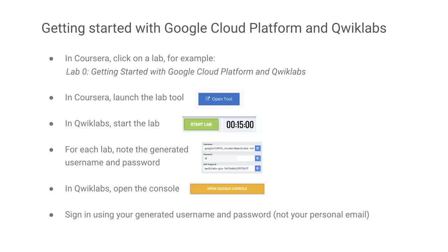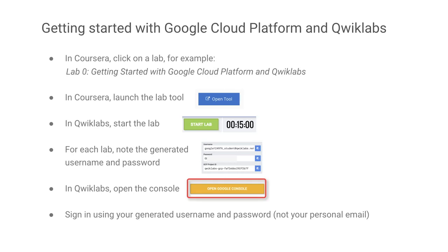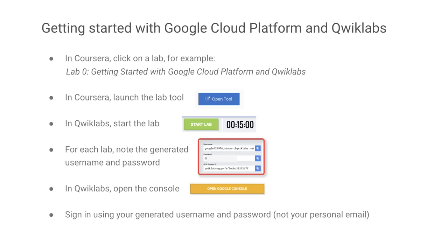After you click that Start Lab, credentials for your student accounts are automatically going to be provided to you in a new box that pops up. In addition, there's going to be another button that says Open Google Console in yellow. Once you open that up, that's going to ask you to log into the Google Cloud Platform — with the key caveat that you're logging in with a student account and not your own personal account, should you already have one set up. And last but not least, we'll do a few demos and walkthroughs of what the UI looks like.